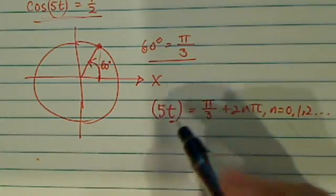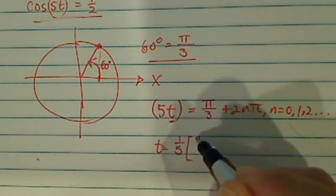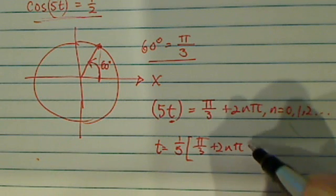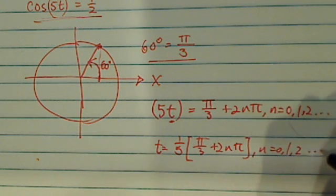Okay, now the interesting part is coming up here. We need to solve for t. So t is equal to 1 fifth pi over 3 plus 2n pi, where n is still the same definition, so on and so forth.